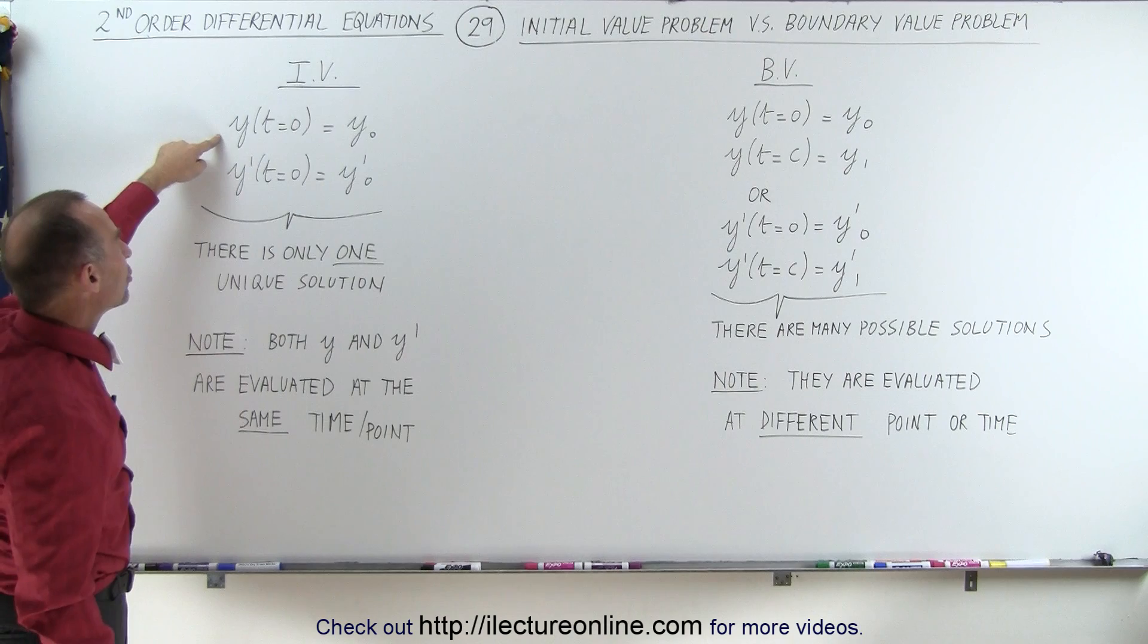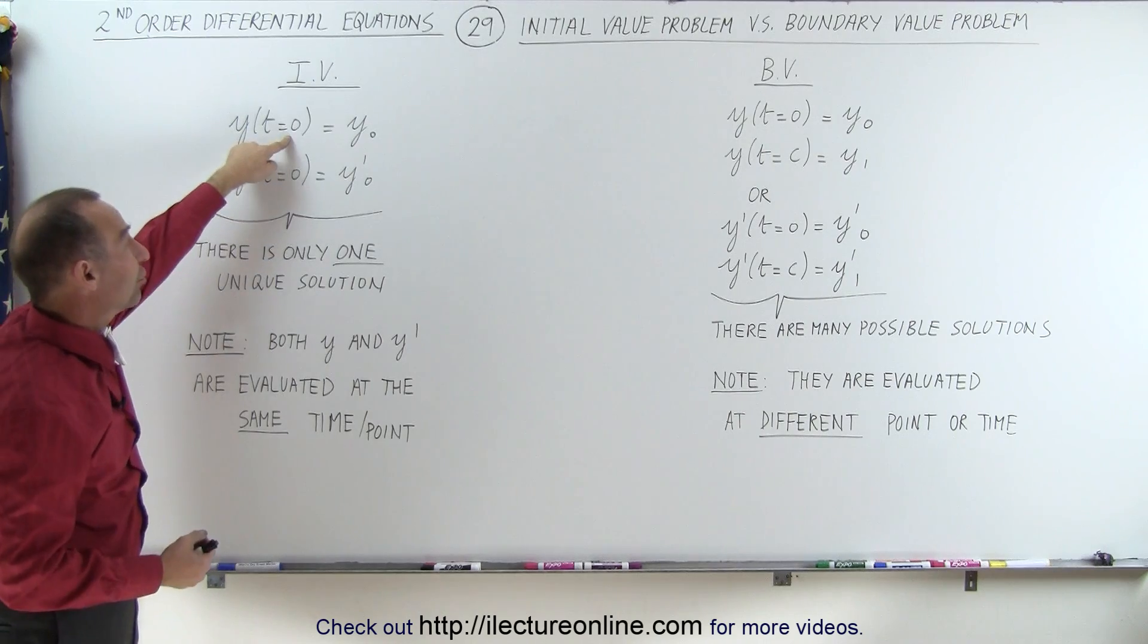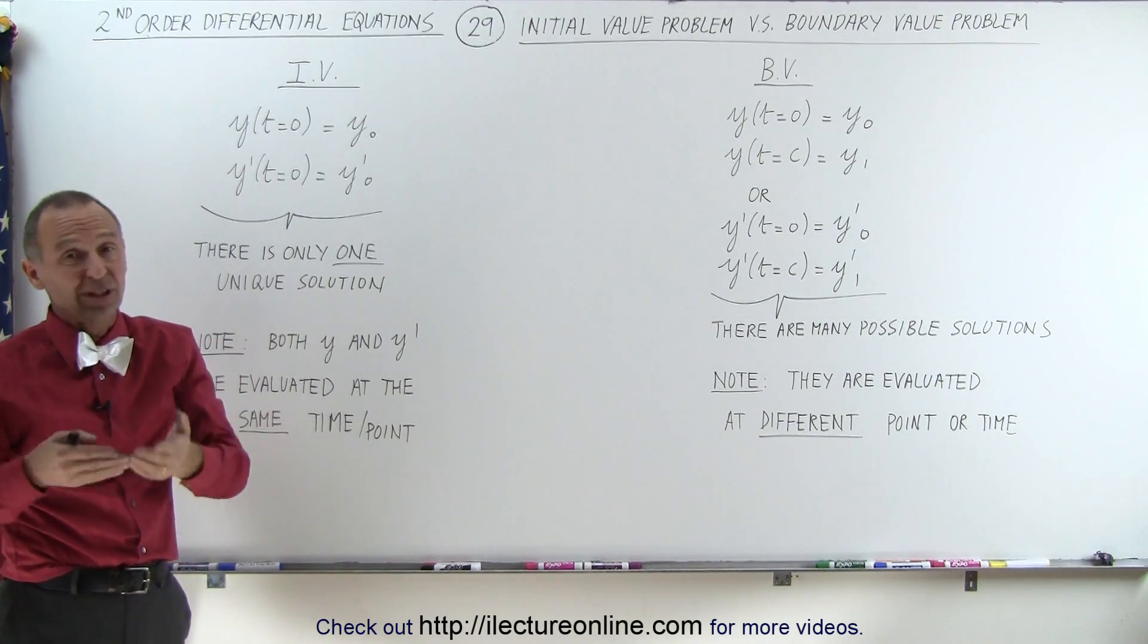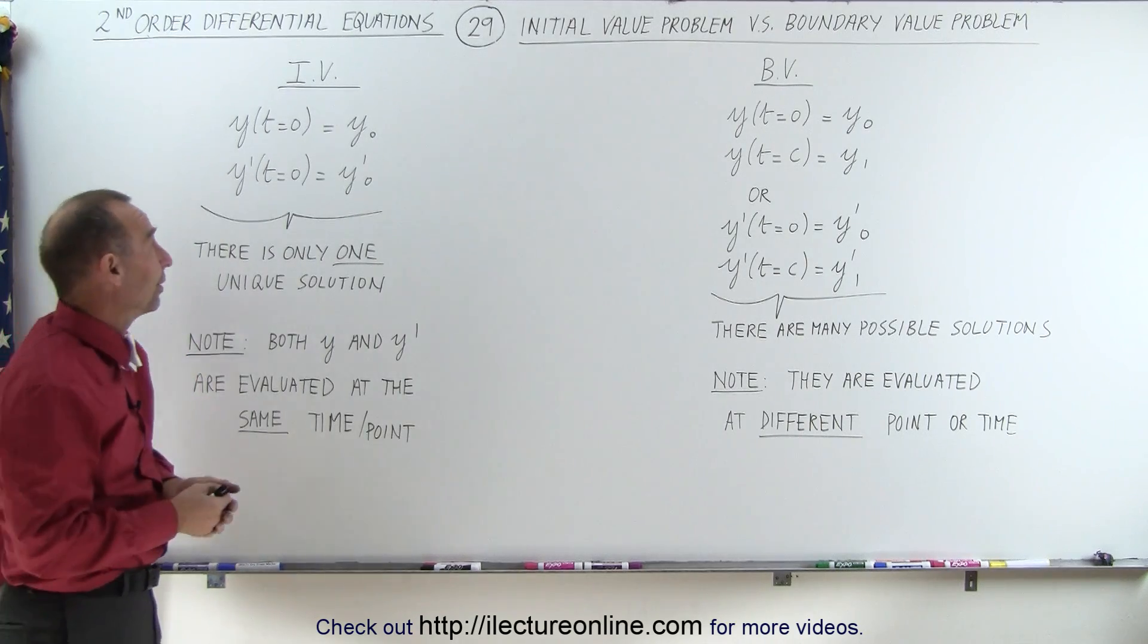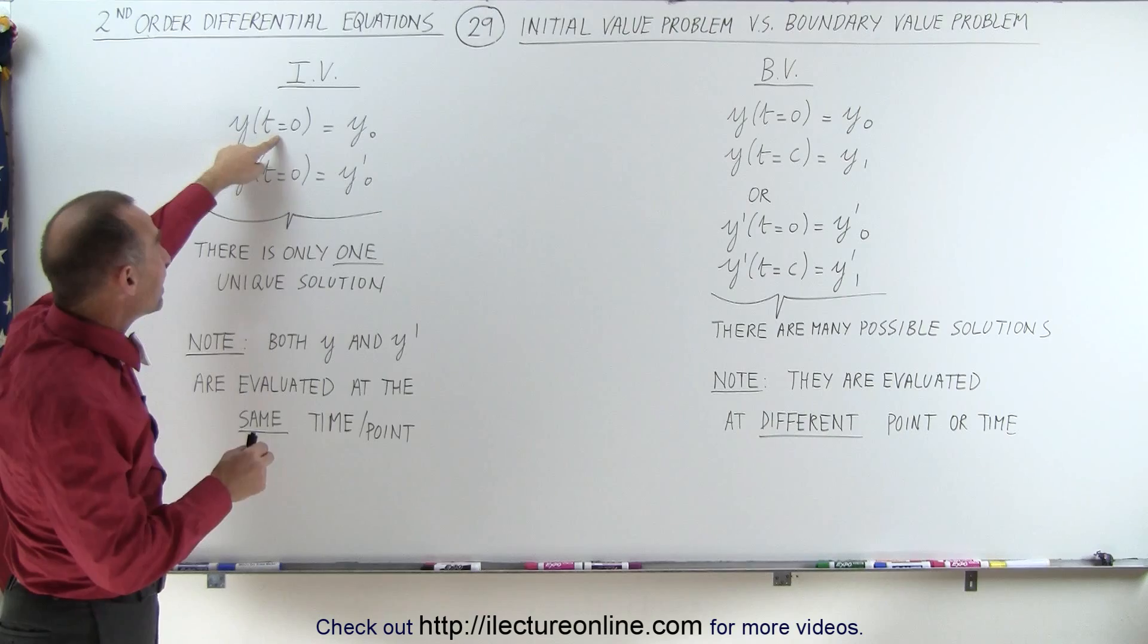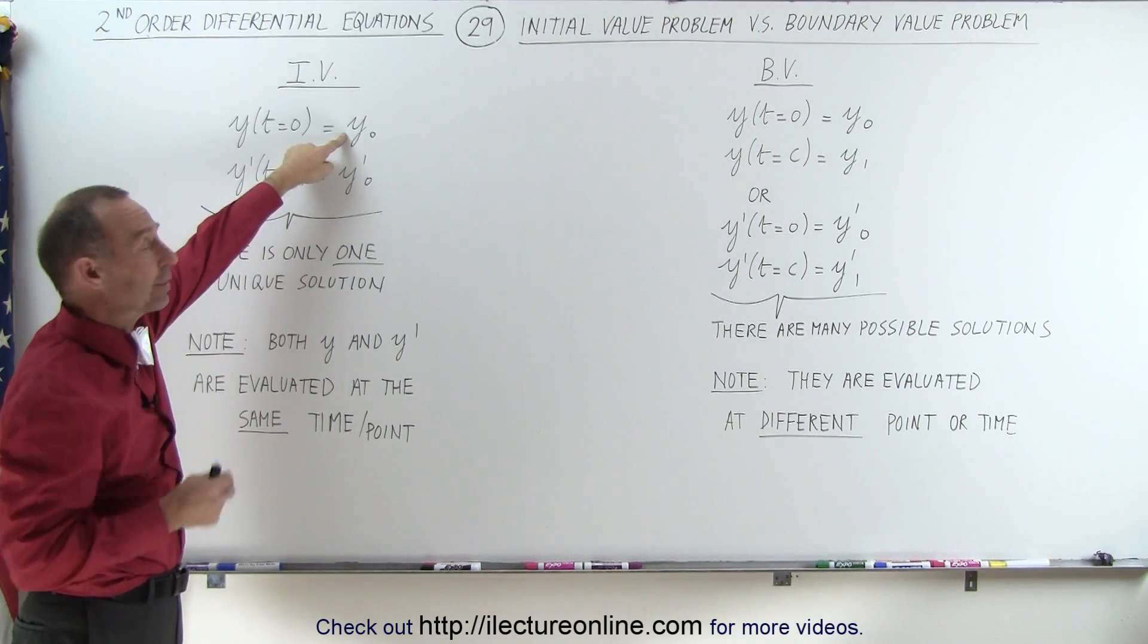In other words, they will give you the value of the function that we're looking for, like in this case y, when t equals zero. Now t could represent time or it could represent a position, it could be x or y or any other variable. So y is evaluated at t equals zero at some initial condition to give us initial value for the function.